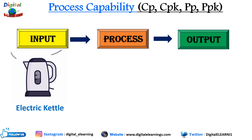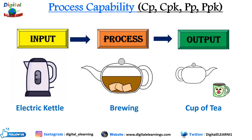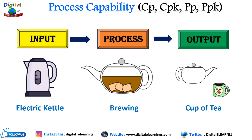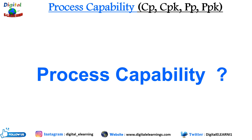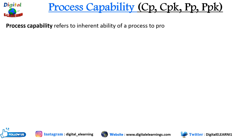We process this — called brewing — by adding tea and allowing the water to boil in the electric kettle. The output is pouring the tea into the cup. This is a very simple input-process-output diagram. Remember, almost every process can be divided into input, process, and output. Now let us understand process capability.